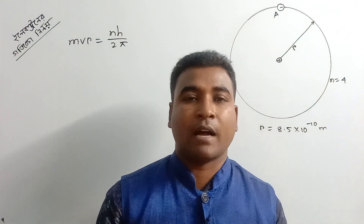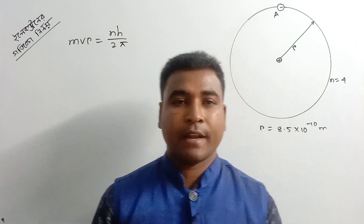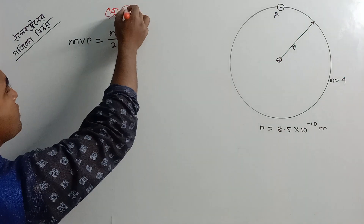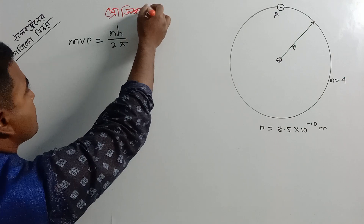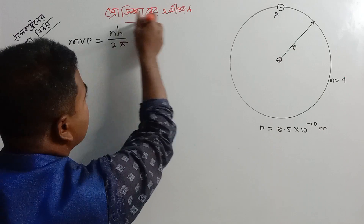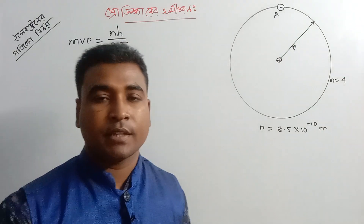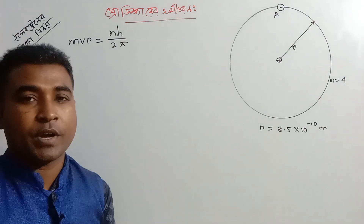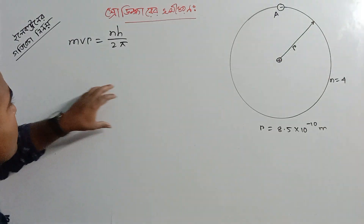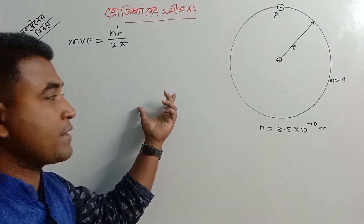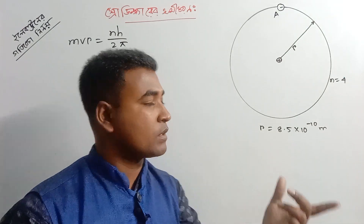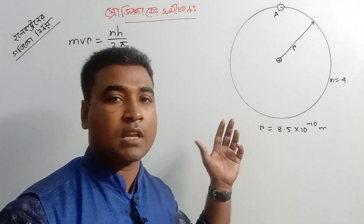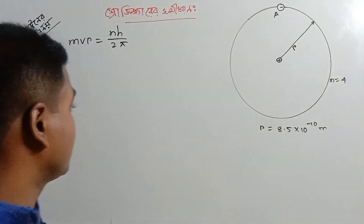So, the electron angular momentum is equal to n, h, 2pi. The electron is equal to n, h, 2pi.